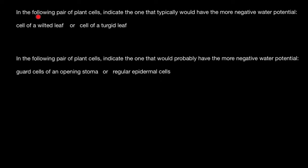And the first question is, in the following pair of plant cells, indicate the one that typically would have the more negative water potential: cell of a wilted leaf or cell of a turgid leaf.